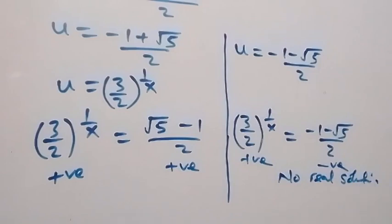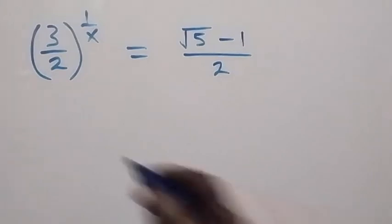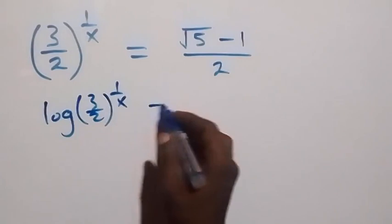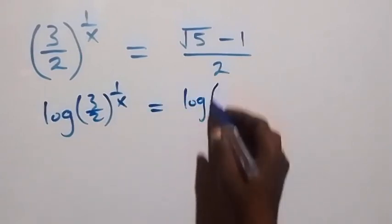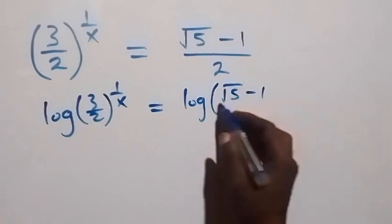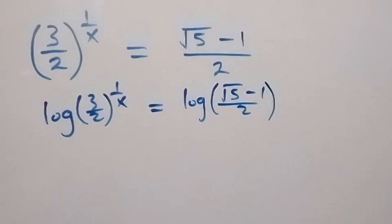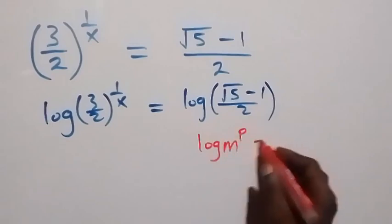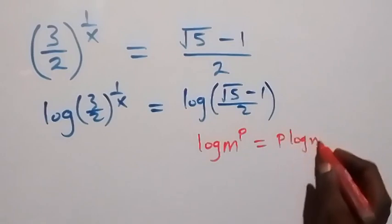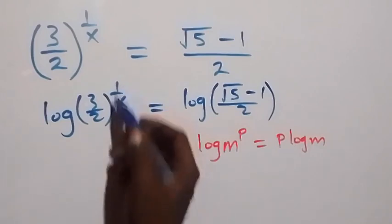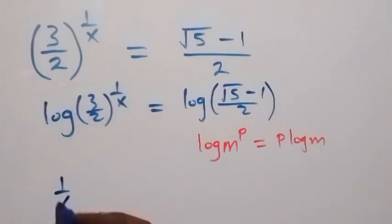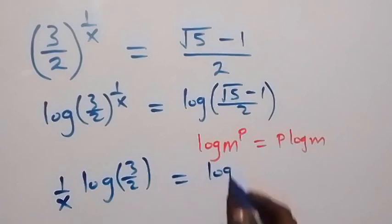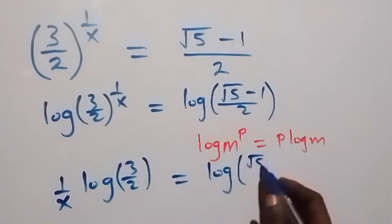We will take the log on both sides. So we have log of (3 over 2) raised to power 1 over x, equals log of (root 5 minus 1) over 2. On the left-hand side, applying the power law of logarithms — when we have log of m raised to power p, this is the same as p times log m — so 1 over x can come out and we have (1 over x) times log(3 over 2) equals log of (root 5 minus 1) over 2.